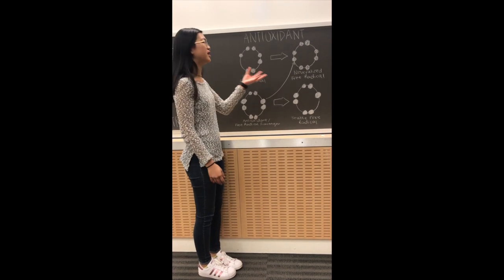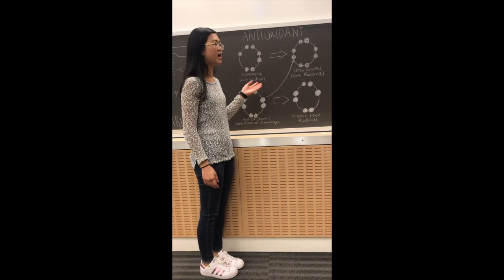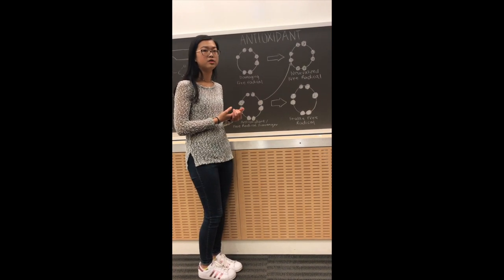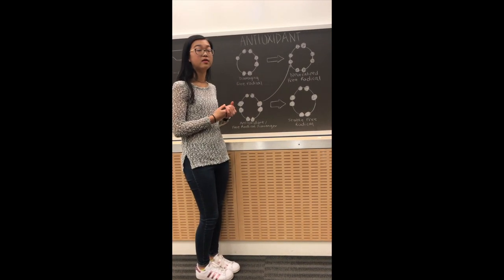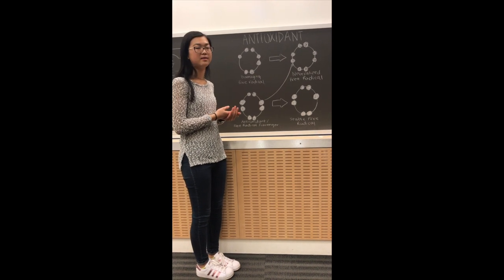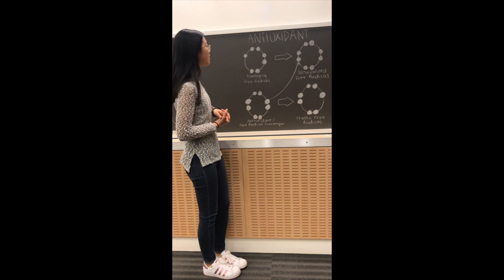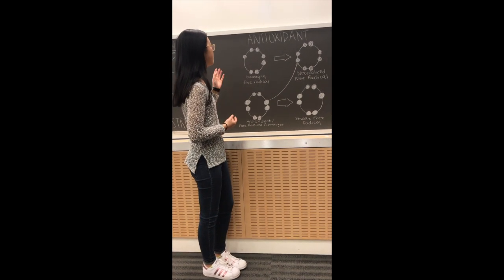And because atoms want to gain a noble gas configuration or at least have all the electrons paired up, the radicals will try to gain electrons from any other source, which means that it'll often damage macromolecules in the body.